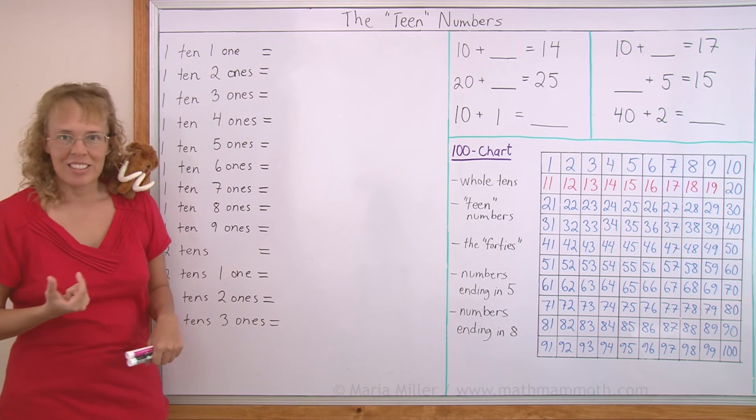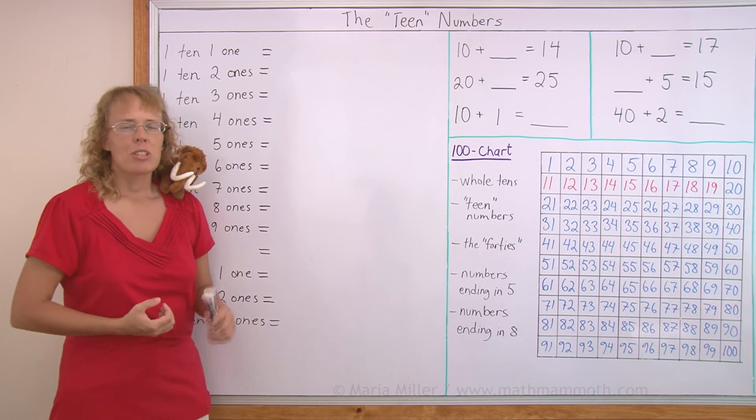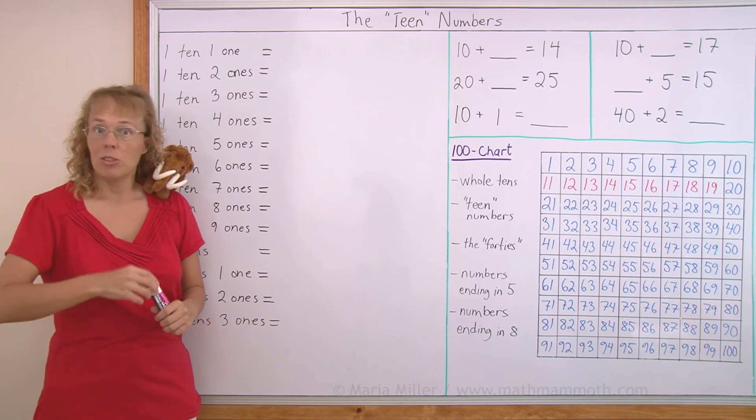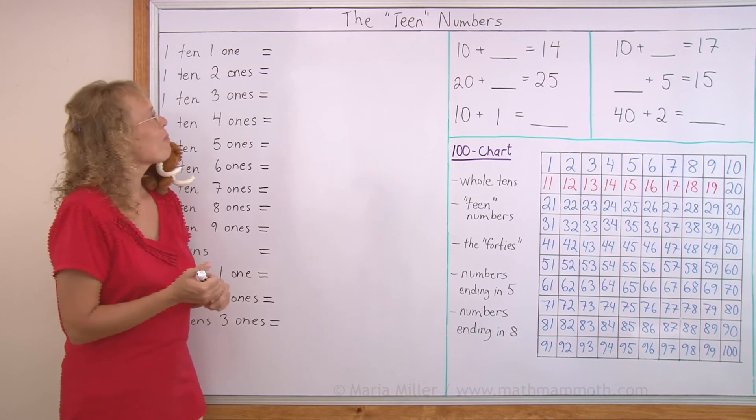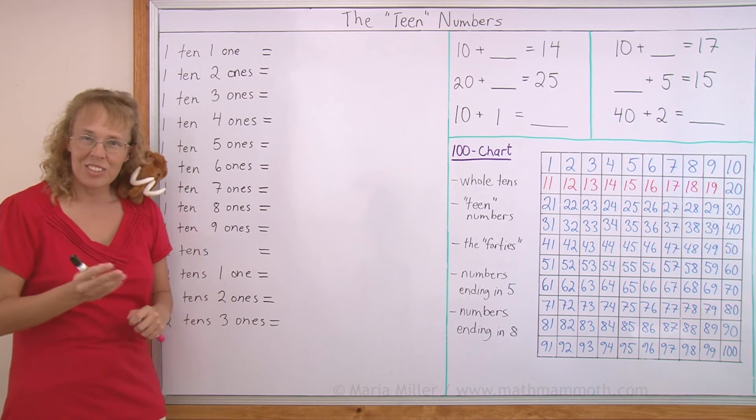And then there's two others that are kind of difficult too, and those are 11 and 12, because they don't really tell you how much they are, such as 72 tells you it's 7 tens and 2. But 11 and 12 they don't. So all those difficult numbers are right after 10.